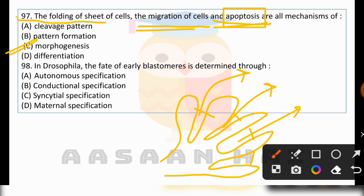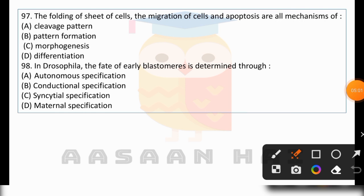So the answer to this question is morphogenesis. These are all mechanisms of morphogenesis. Question 98: In Drosophila, the fate of early blastomeres is determined through: (A) Autonomous specification, (B) Conditional specification, (C) Syncytial specification, or (D) Maternal specification.